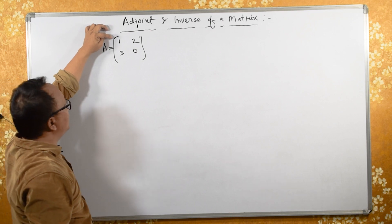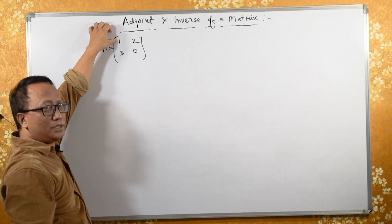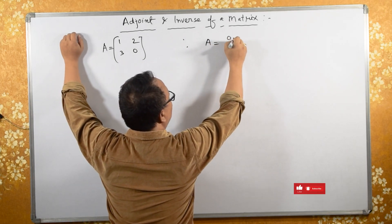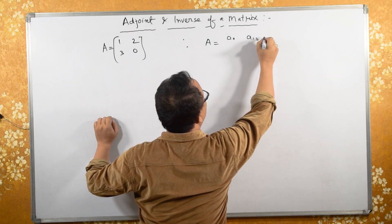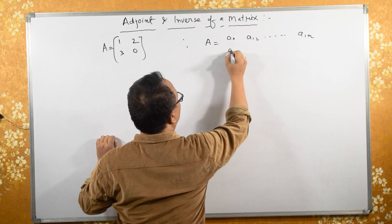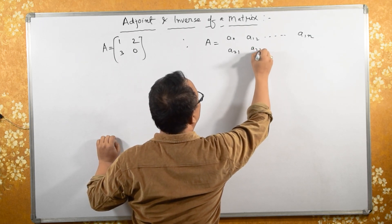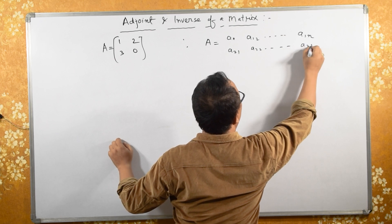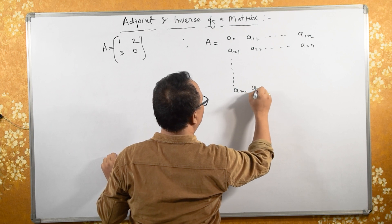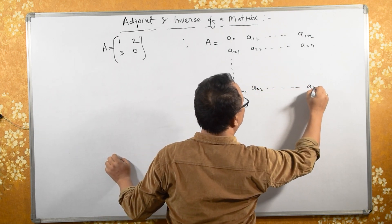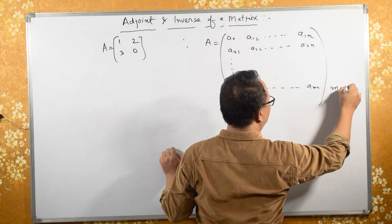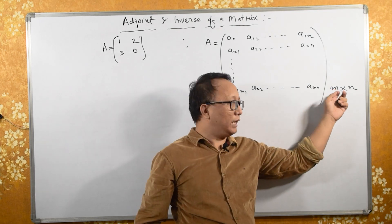Any matrix — let's generalize — is written as A equals A11, A12, and so on up to A1N. Then A21, A22, and so on up to A2N. Similarly, AM1, AM2, and so on up to AMN. The order of this matrix is M by N, where M is the number of rows and N is the number of columns.